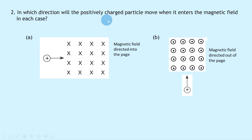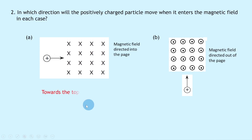Question two asks for the direction of a positively charged particle entering a magnetic field in each case. In part a, the positively charged particle enters a magnetic field directed into the page, shown by the crosses. For positively charged particles, we use the right hand rule but then reverse the direction at the end. Pointing your index finger into the page and your middle finger to the right, the thumb points downwards — but since this is a positive charge, we reverse it, so the particle moves upwards, towards the top of the page.